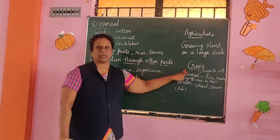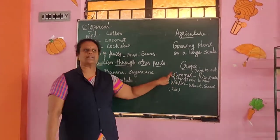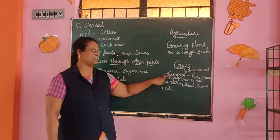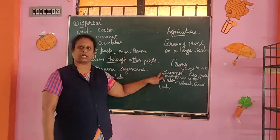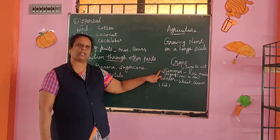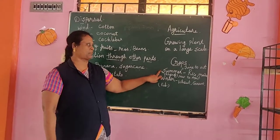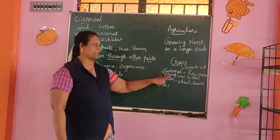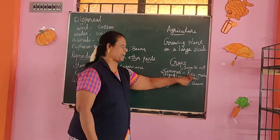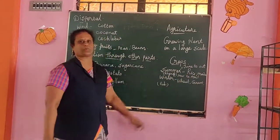There are two types of crops: summer crops and winter crops. Summer crops, also called Kharif crops, grow during June to October. Examples of summer crops include rice and maize.